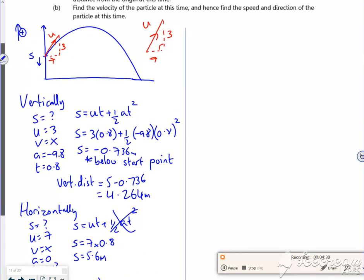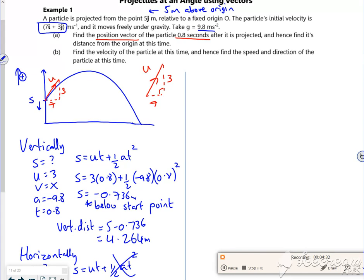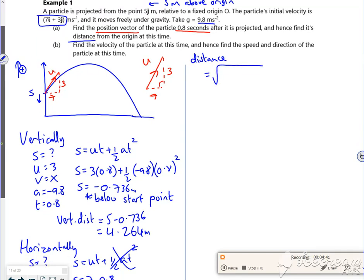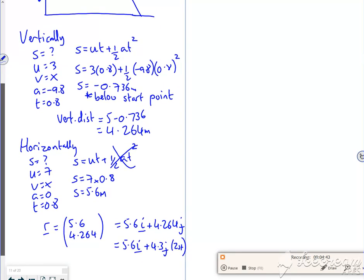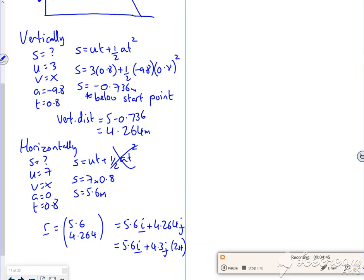What else does it want there then? So then hence find the distance. The distance is just Pythagoras. So it's the square root of, what's my values? 5.6 and 4.264.